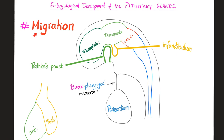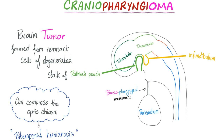These are great examples of cell migration. Don't forget that craniopharyngioma is a tumor that arises from the remnants of Rathke's pouch.